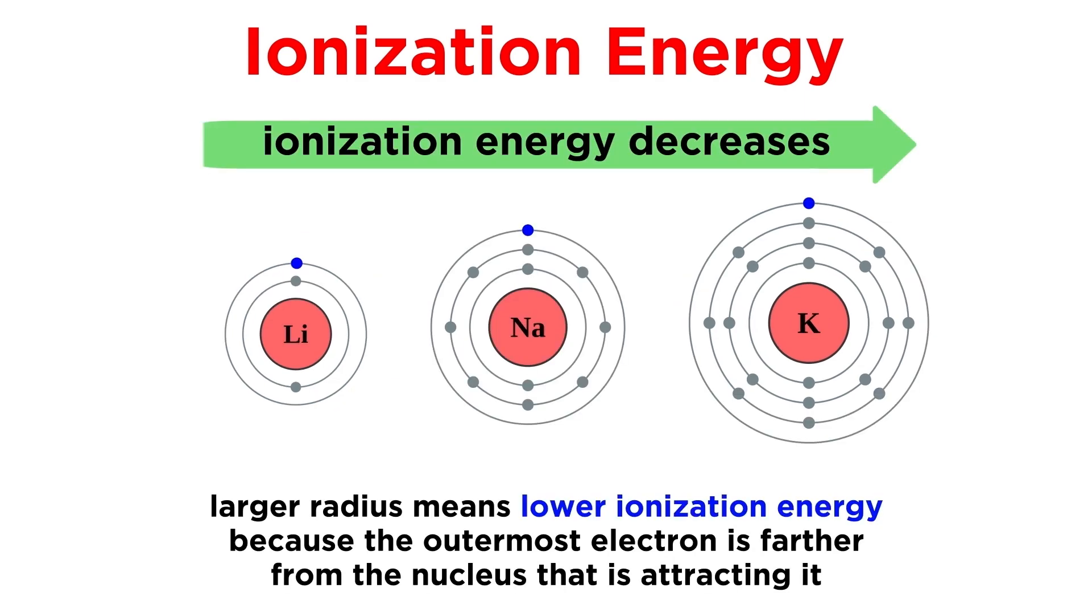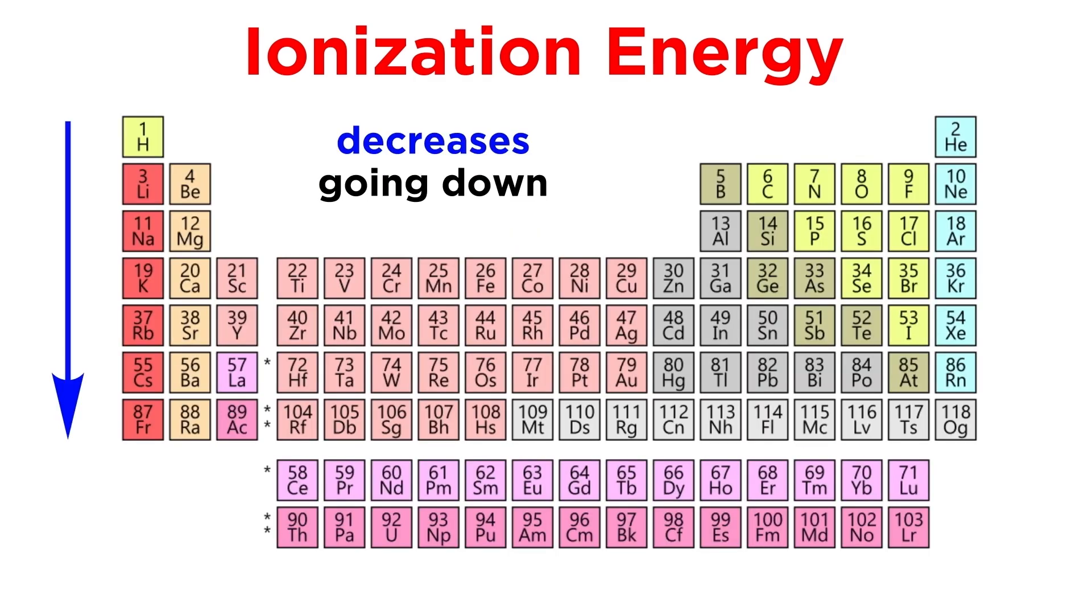So the electron that is removed will always be the outermost electron. As the atom gets larger, the outermost electron gets farther away from the nucleus, and therefore becomes easier to remove. Every time we add a shell, we are moving further away from the nucleus, so ionization energy decreases as we move down the periodic table.